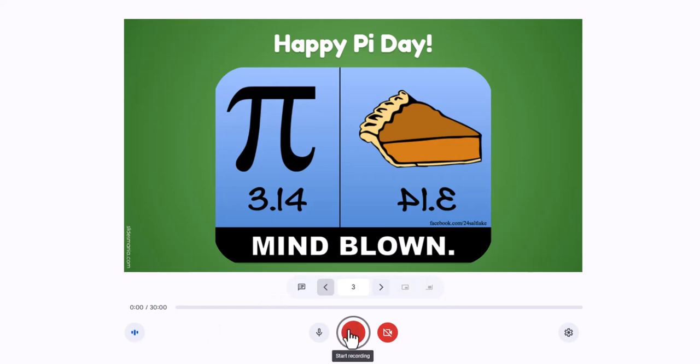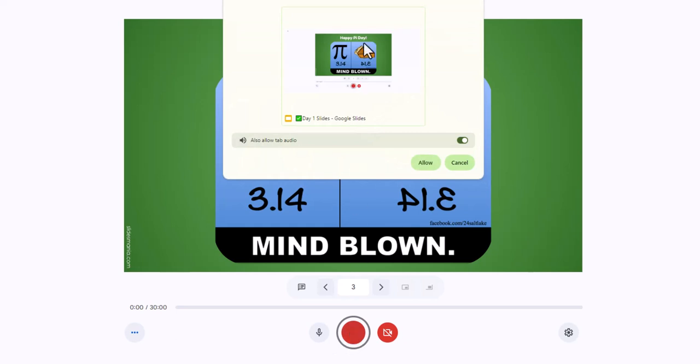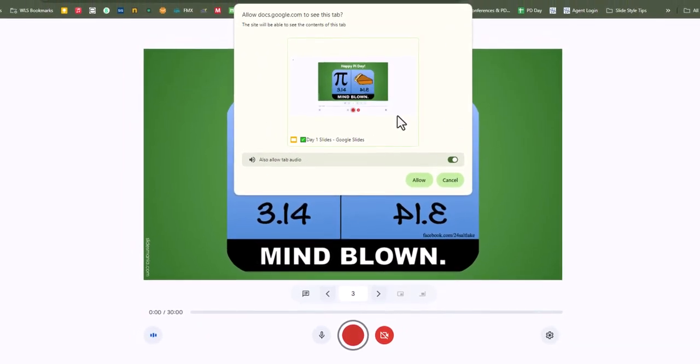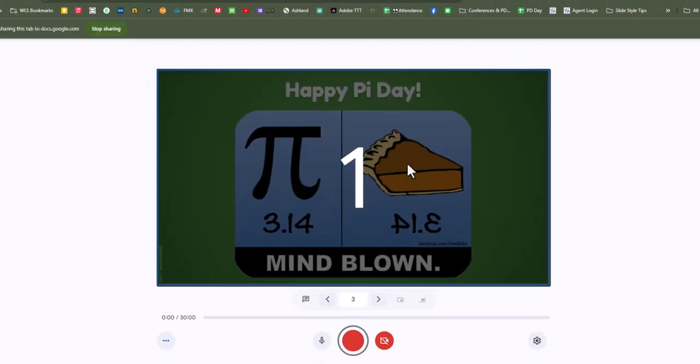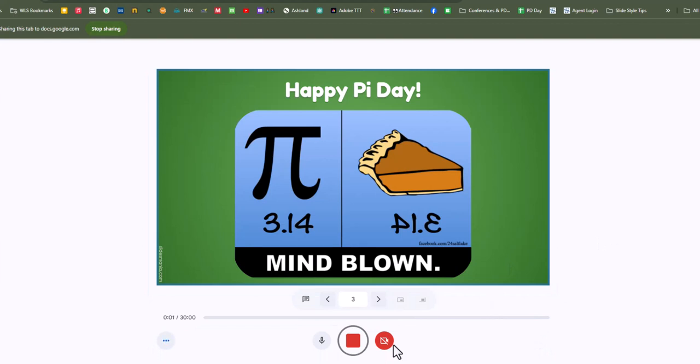So here we go, the controls are pretty easy. To start recording I'm going to click here. So this window will pop up and you just want to allow the recording to happen, and it gives me a little countdown and you can tell right here it is starting to record.